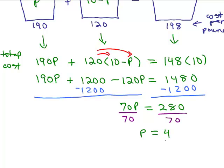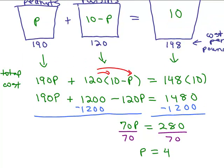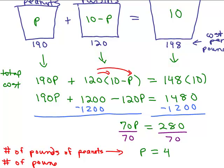All right. Now, you have to remember what P stands for. P stands for how many peanuts I'm going to put in the mix. And 10 minus P stands for how many raisins. So, this right here is the number of pounds of peanuts, right? So, what would the number of pounds of raisins be? We know that was 10 minus P, right? So, 10 minus 4 would be 6. We'd have 6 pounds of the raisins.